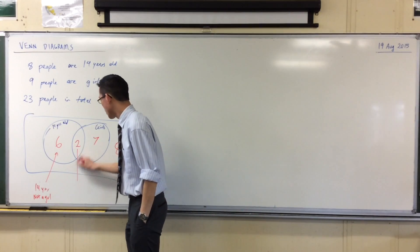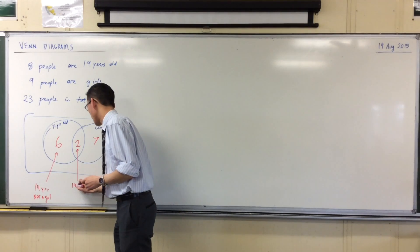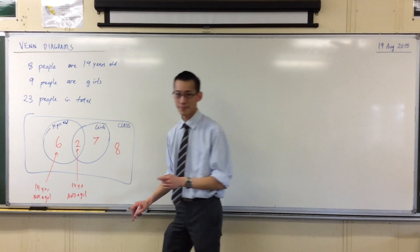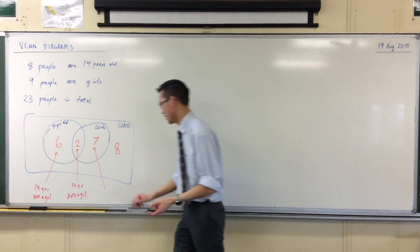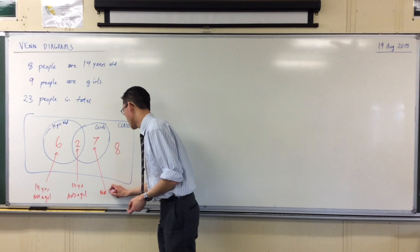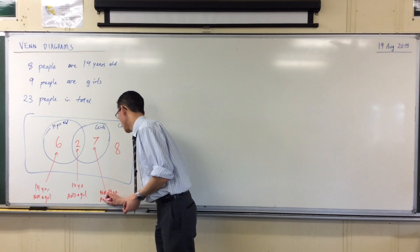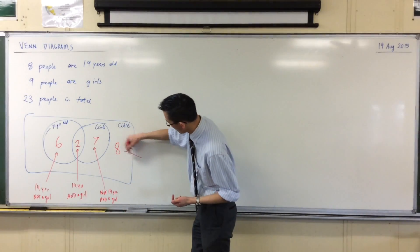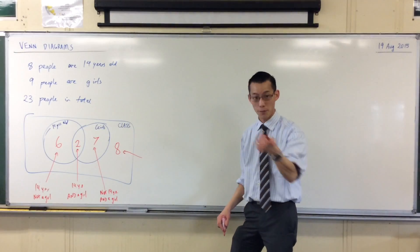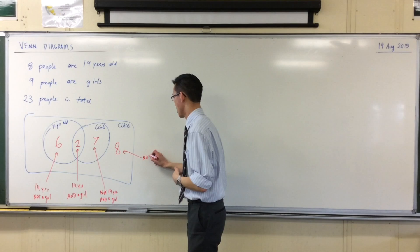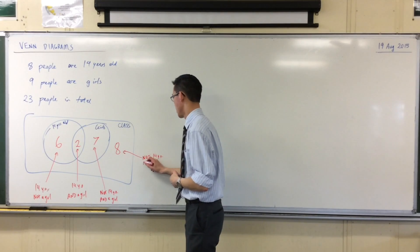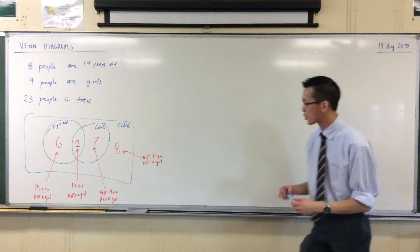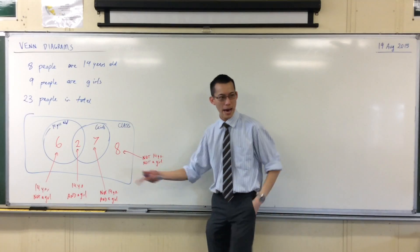Up here in the middle, those two people are 14 years old and a girl. I could continue this. The seven means not 14 and a girl. And then of course our last eight, these are the people who are neither 14, not 14, and also not a girl.